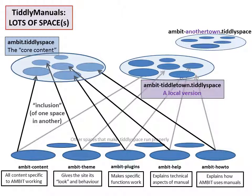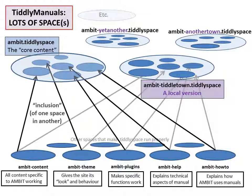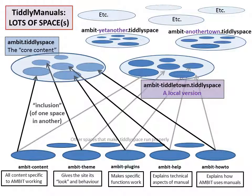If another team comes along, they can do the same, and another, and another, etc. At the time of recording, there are about 40, or just over 40, versions of the Ambit manual now in existence. Why don't they all just look at the same one? Well, one of the Ambit principles is this idea of respect for local practice and expertise.